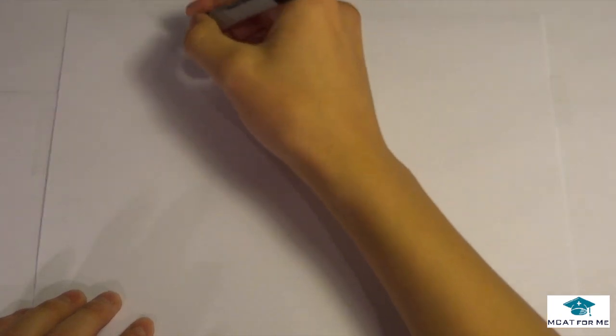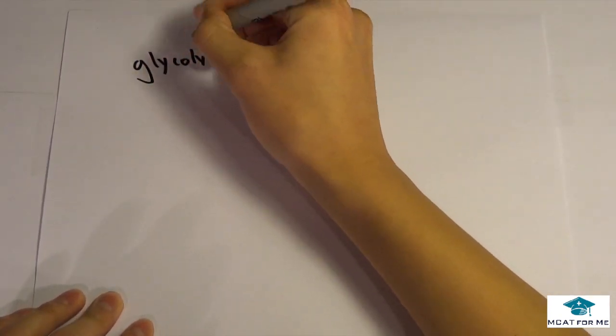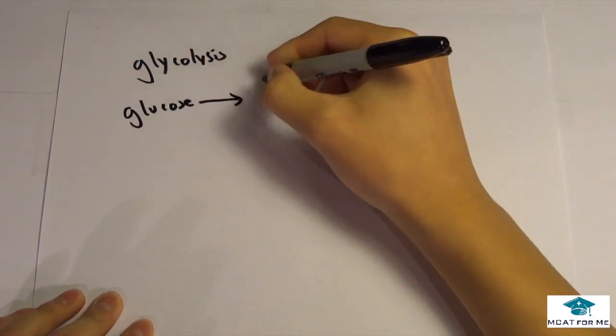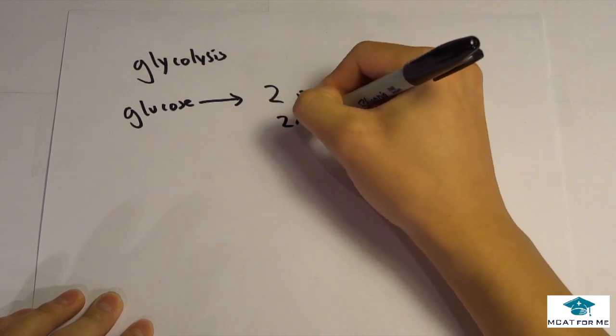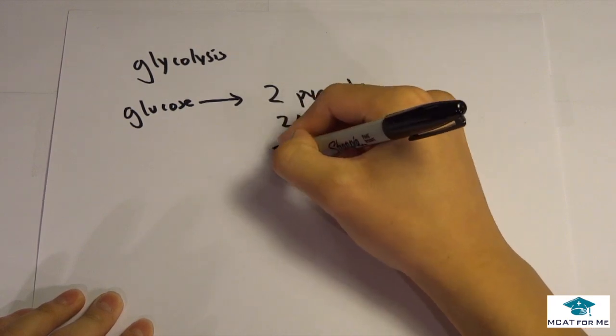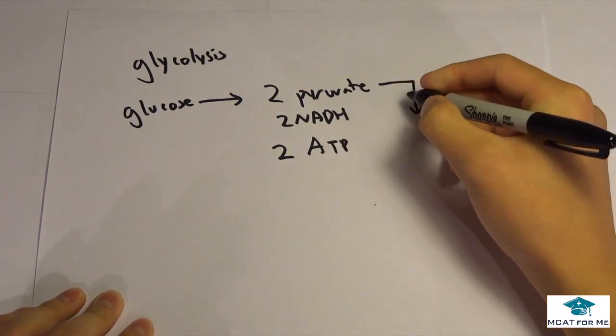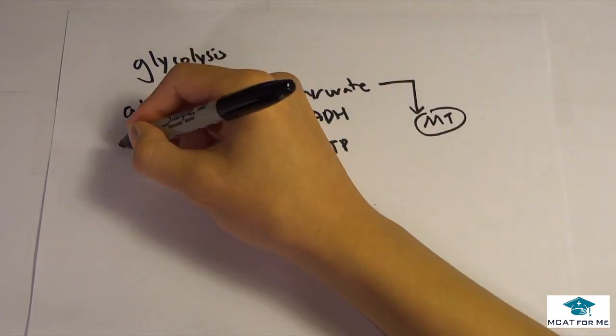Before that we want to just see after glycolysis. So glycolysis we start with glucose and this will produce 2 pyruvate, 2 NADH and also 2 ATP. So these two pyruvate will be shuttled now into the mitochondria because remember glycolysis is in the cytoplasm.